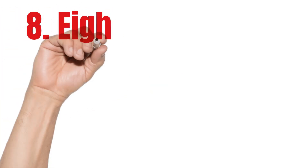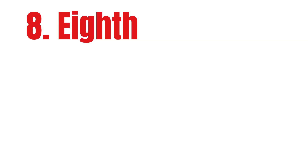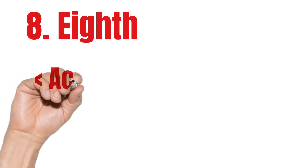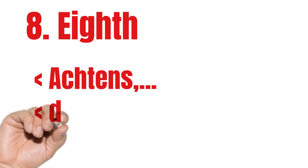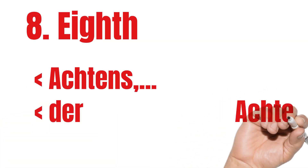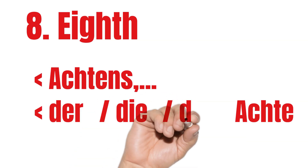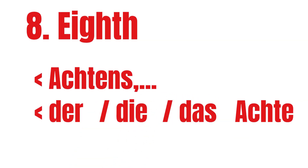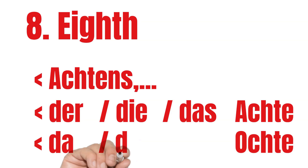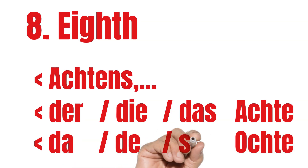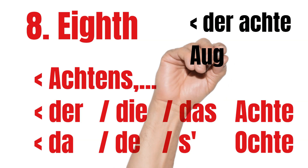Eighth. For numbered lists, eighth is Achtens. When we use articles: der Achte, die Achte, das Achte. In Austrian German it's a little bit different — you may hear versions like der Ochte, die Ochte, das Ochte. With months, the 8th of August is der Achte August, or der Ochte August.